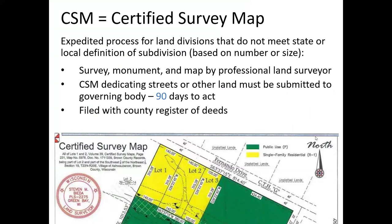The last term I want you to be familiar with is a CSM, or a certified survey map. Anything that does not meet the state definition or your local definition of a subdivision — other land divisions, typically three or fewer or very large lots — goes through an expedited process where you're surveying, monumenting, and mapping it by a professional land surveyor, then filing with the county register of deeds.